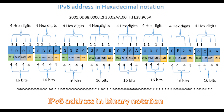The term nibble is used to represent a group of 4 hex digits or 16 binary bits. In an IPv6 address, we have 8 nibbles separated by colons.